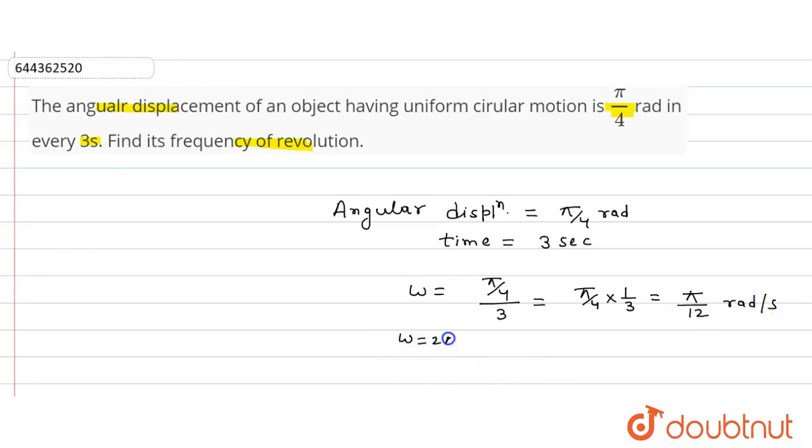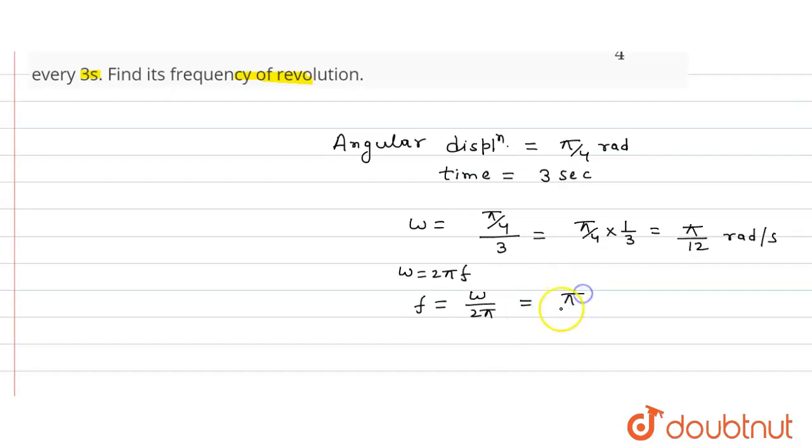So frequency f is equal to omega upon 2π. So here omega value is π upon 12.